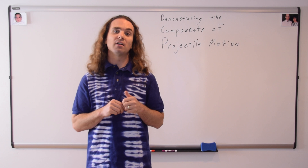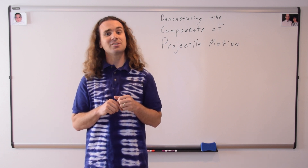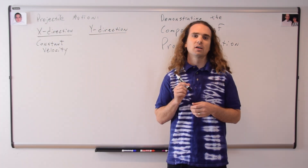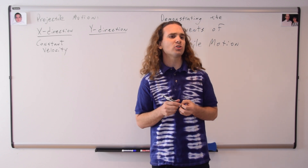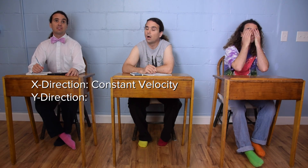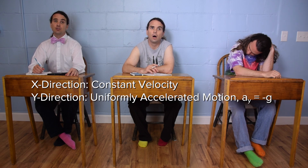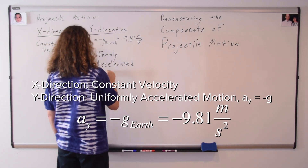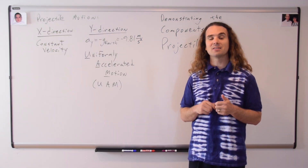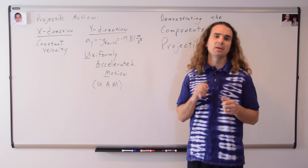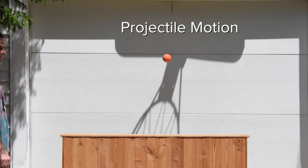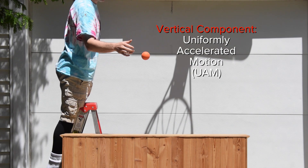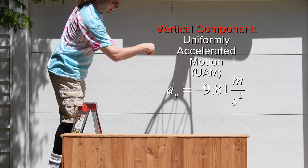Let's start with a quick review of projectile motion. Bobby, please remind me what is true of the motion of a projectile in the x direction? In the x direction, a projectile will move at a constant velocity. Correct. In the x direction, the velocity of a projectile is constant. Billy, what about the motion of a projectile in the y direction? In the y direction, a projectile experiences uniformly accelerated motion with an acceleration equal to the negative of the acceleration due to gravity. On Earth, that acceleration would be equal to negative 9.81 meters per second squared. Yes, in the y direction, the acceleration is constant. Therefore, we can use the UAM equations of motion.